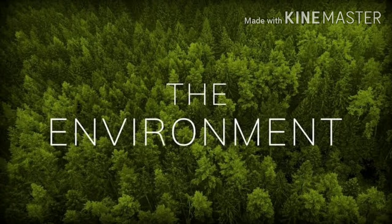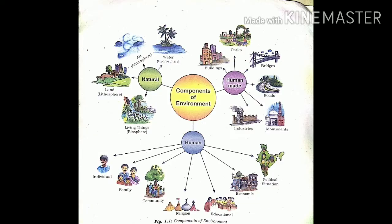Now let's see the components of environment. There are totally three components of environment. The first is natural. Natural consists of four parts: living things, that is the biosphere; land, that is the lithosphere; air, that is the atmosphere; and water, that is the hydrosphere.